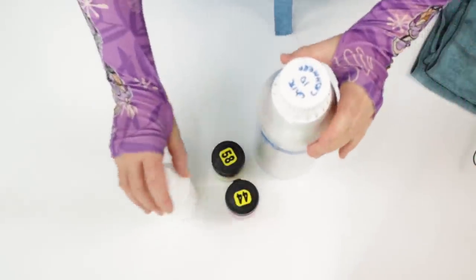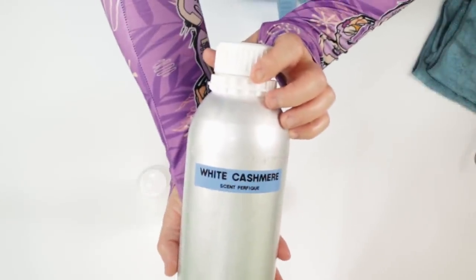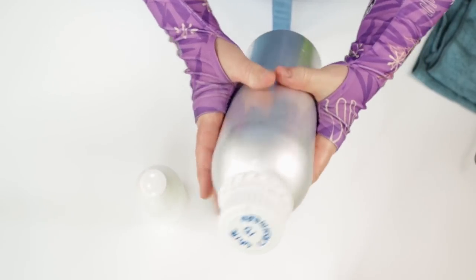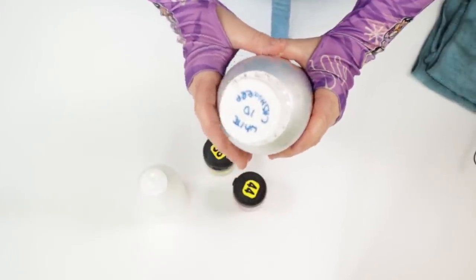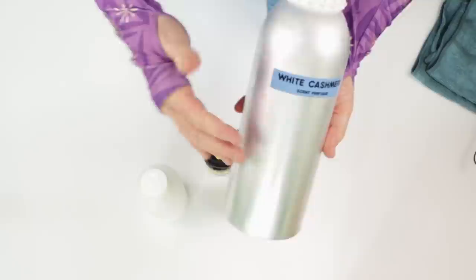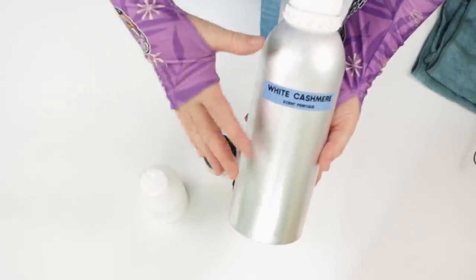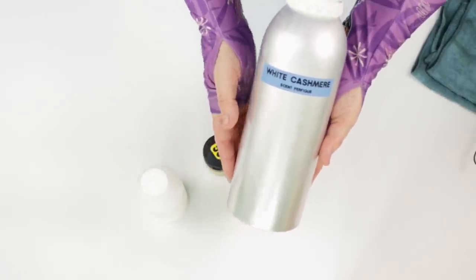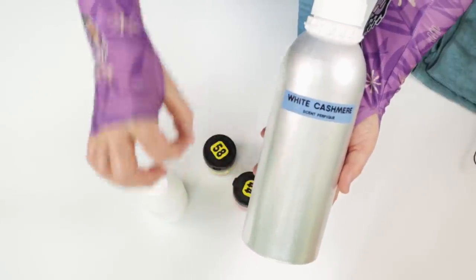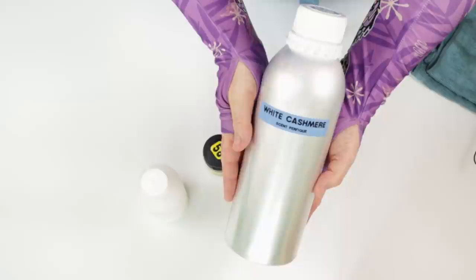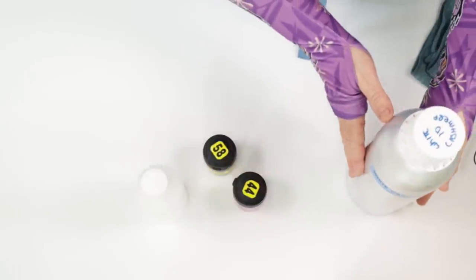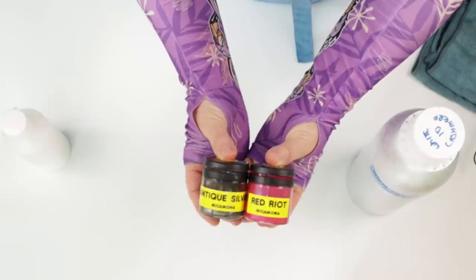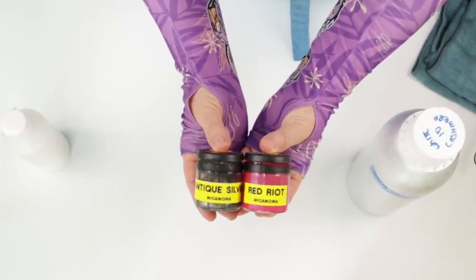Now for my additions today I'm using White Cashmere from St Perthique and I love this fragrance. Now depending if you've seen my videos before, you've seen me use this fragrance in other assessments but I'm just doing a slightly different color scheme with it today. So White Cashmere and then color-wise some good old titanium dioxide and then just two other colors: Antique Silver and Red Riot, both of those are from Micamama in the UK.